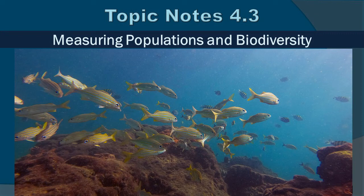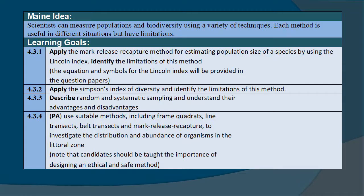Topic Notes 4.3: Measuring Populations and Biodiversity. This picture is actually from a nearshore reef off of Palm Beach County and it shows a school of small mouth grunts. How do we know how many of what is in any particular area? The main idea here is that scientists can measure populations and biodiversity using a variety of techniques. Each method is useful in different situations but have limitations.